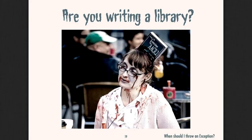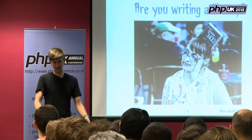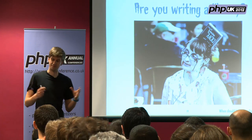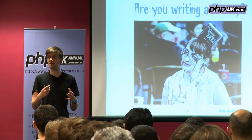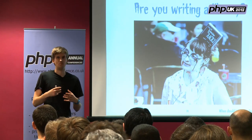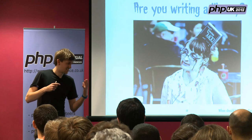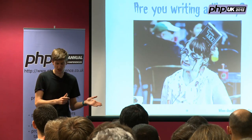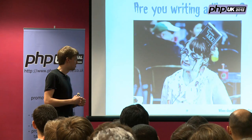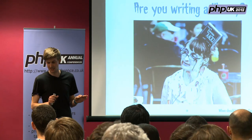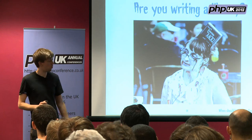Think about the way your code is going to be used. If you're writing a standalone application, you're probably free to throw and catch exceptions as you wish. If you're writing a library, at some point your code will be part of someone else's application, and you don't really want to impose your idea of what's exceptional onto someone else's code. If you're throwing exceptions and potentially terminating their program, they aren't going to be happy. So really think about whether your public API should be throwing exceptions, and we will look at some alternatives.